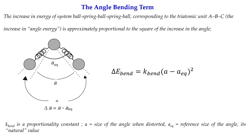Next is the bond bending term. This can be similarly expressed; three atoms A, B, C are required for a bond angle. The angle has an equilibrium value, and when you change the bond angle the energy changes. The expression is: E_bend = k_bend × (A − A_eq)², where k_bend is the proportionality constant determining resistance to angle change, A is the distorted angle, and A_eq is the reference equilibrium angle.